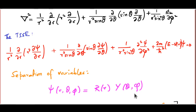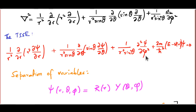After this, we carry out the standard steps in separation of variables. We plug this form into the PDE itself. Capital Y is a constant as far as the r-derivatives are concerned, so it comes out. The derivatives of capital R with respect to small r become ordinary derivatives. Capital R comes out of the theta and phi partial derivatives, and capital Y stays inside. Capital Y being a function of two variables theta and phi means those remain partial derivatives at this stage. We then divide through by capital R times capital Y, and the equation takes a separated form.